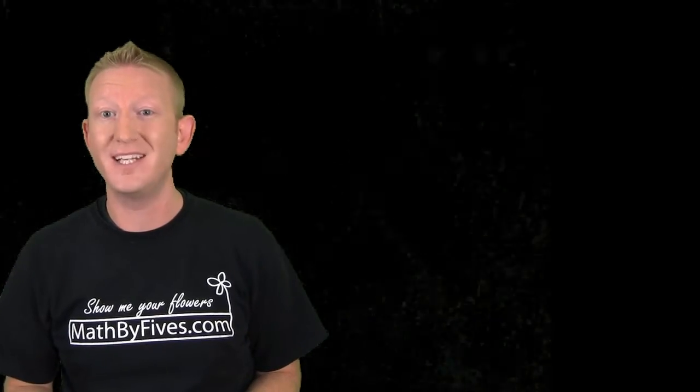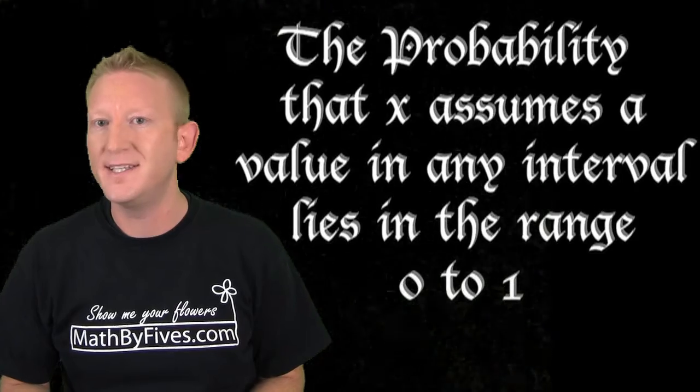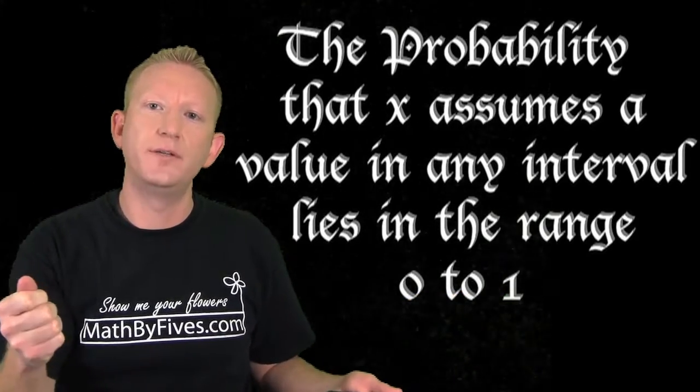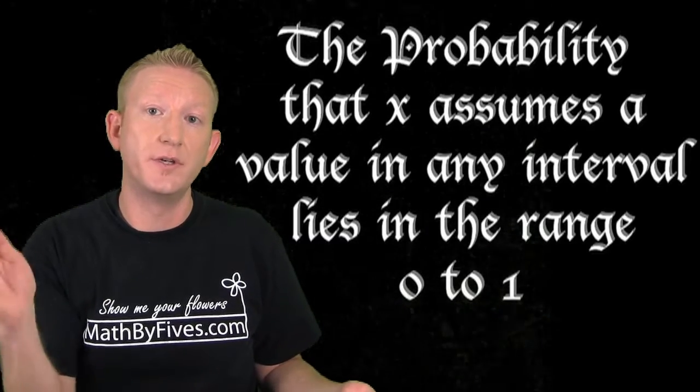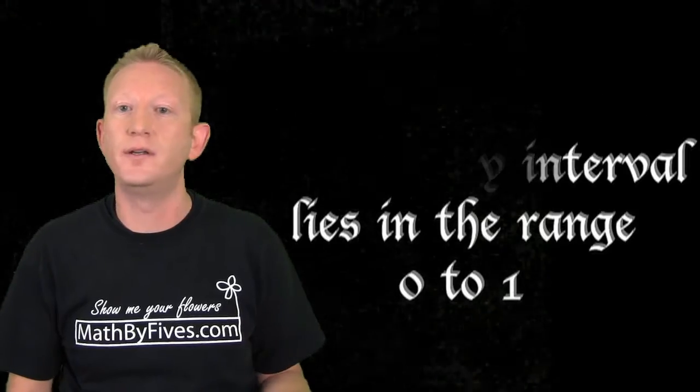But a continuous probability distribution has these two properties. One, the distribution, everything underneath the curve, has to add up to be 1 because it's a probability distribution. So if we add up all of our probabilities, it adds up to be 1.